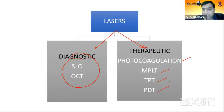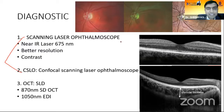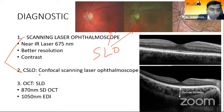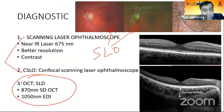In diagnostics, we have two types. The scanning laser ophthalmoscope (SLO) is used for capturing fundus images, and the confocal scanning laser is used in Heidelberg technology for multimodal imaging. In OCT, we have evolved into spectral domain and now Fourier domain, using 870 nm and EDI with 1050 nm wavelength to better analyze choroidal tissues.